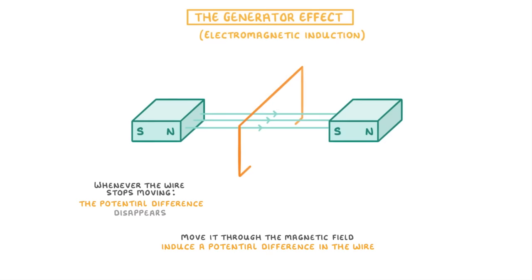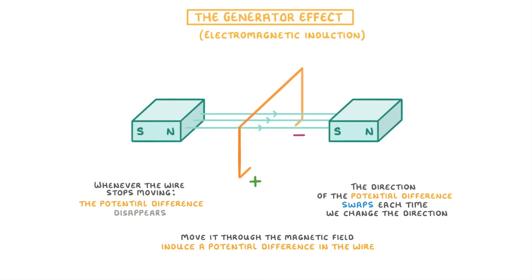So if the wire is not moving, then there won't be any potential difference because nothing is changing. The other thing to notice is that the direction of the potential difference swaps each time we change the direction, which is why the plus and minus signs keep switching around.